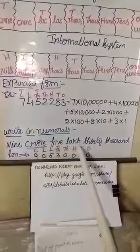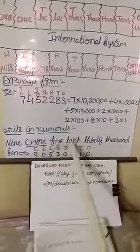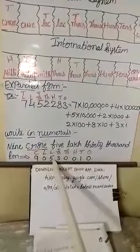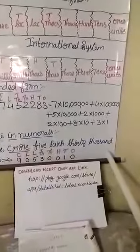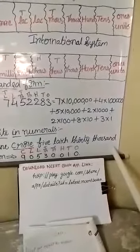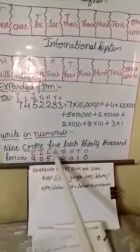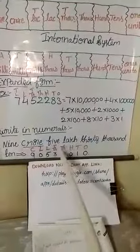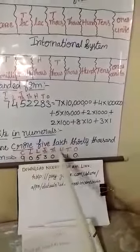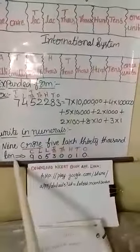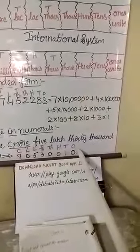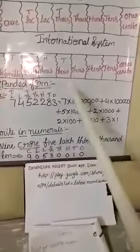At the crores place, only one digit — so we write 9. At the lakhs place, the digit is 5, which is a one-digit number. Since there is nothing at ten lakhs, we place 0 there. For 30,000 — in the Indian system, periods are of 2 digits, so 10,000 gets 3 and 1,000 gets 0. At the hundreds place, nothing is written so we place 0. For 10, it is a 2-digit number — 1 at the tens place and 0 at the ones place.